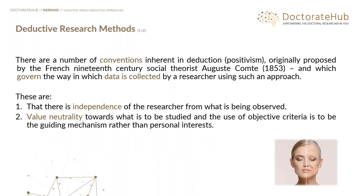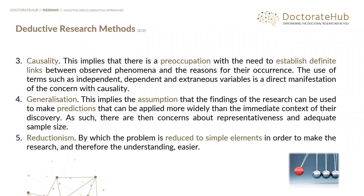Independence of the researcher leads to value neutrality — you try to avoid having any particular views. As an independent researcher, you work with what the data tells you: collect the data, apply statistical techniques, and see what they tell you. You're not trying to reach a conclusion — you may have a hunch about the hypothesis, but you're trying to control your emotions as much as possible, difficult as that may be.